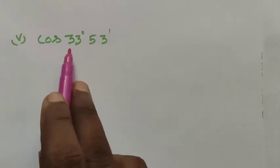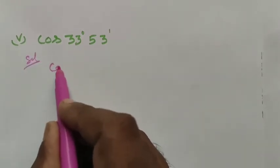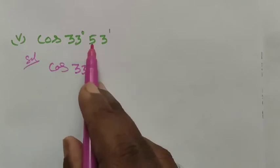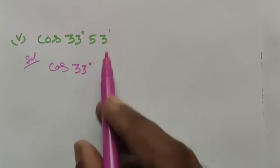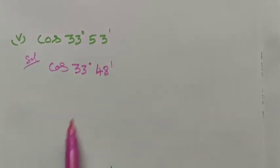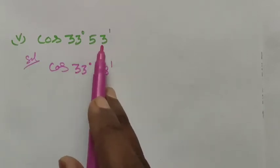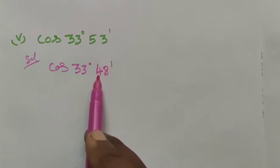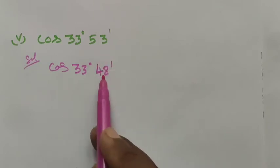Next we see the fifth roman number, that is cos 33 degree 53 minutes. Solution: cos 33 directly we can able to find, but 53 minutes is not possible to find. So if you are looking at the table, this is the value of cos.